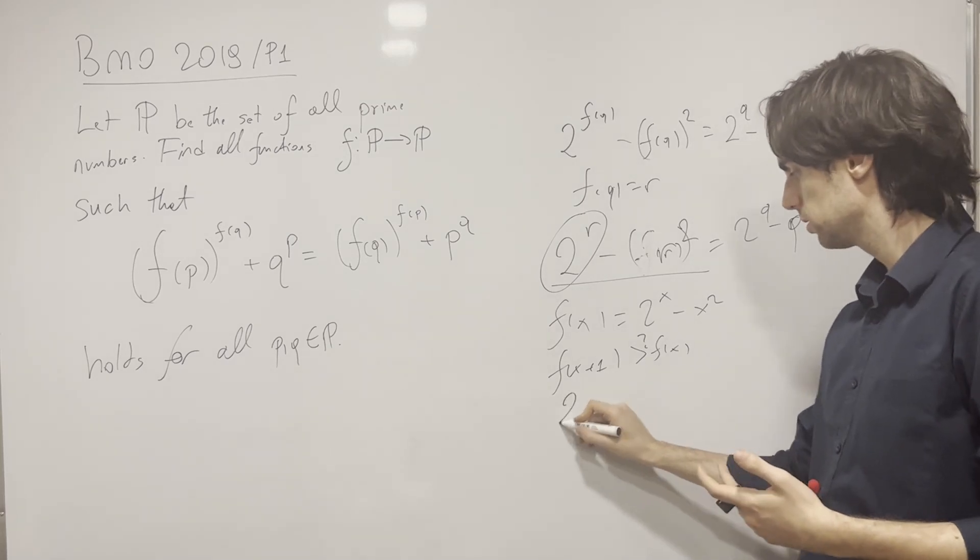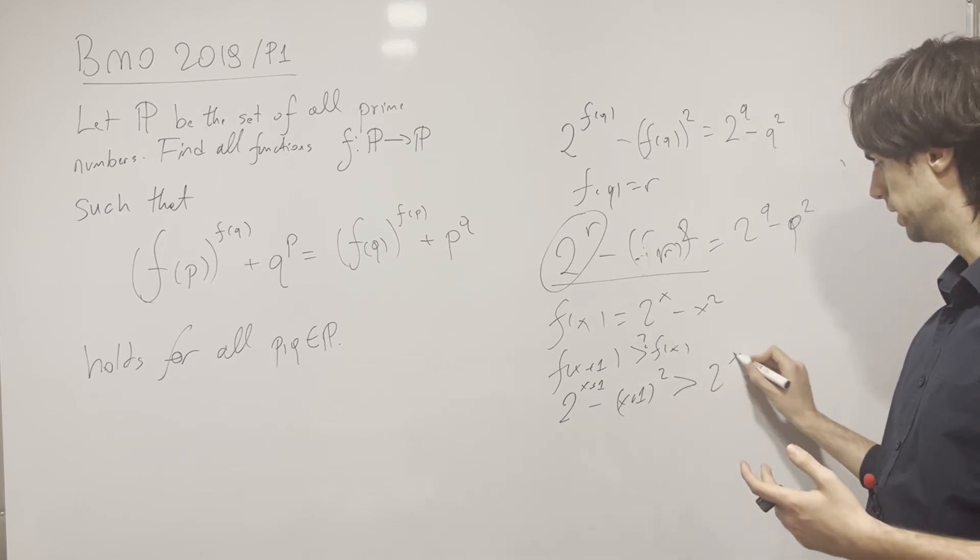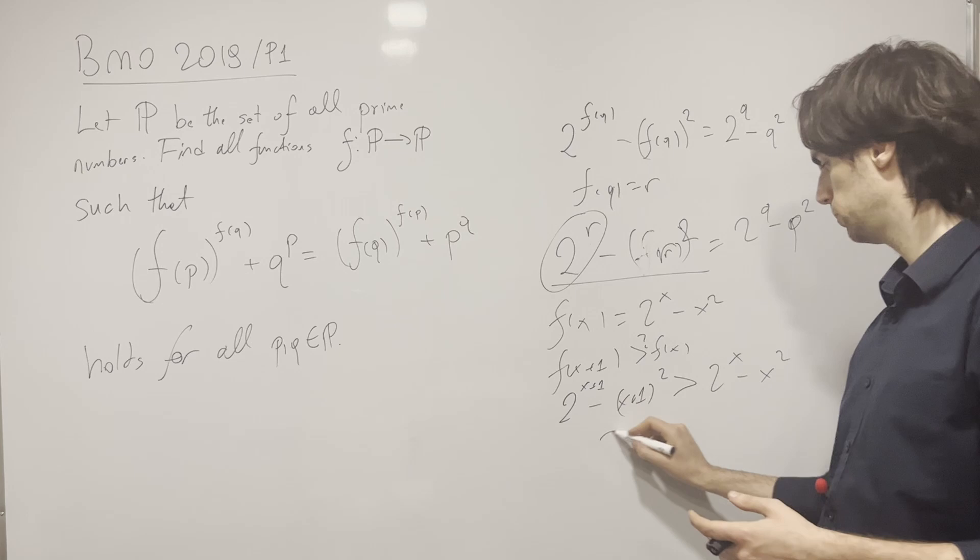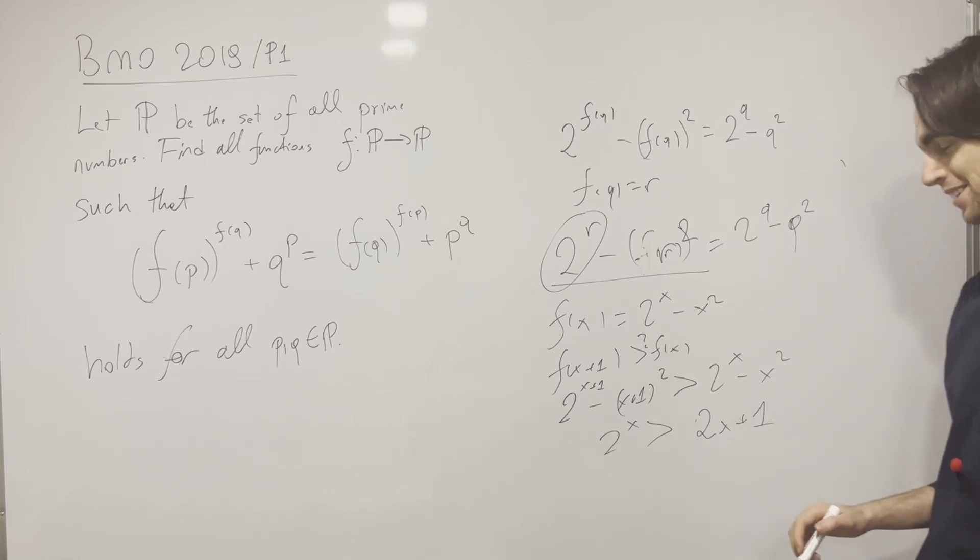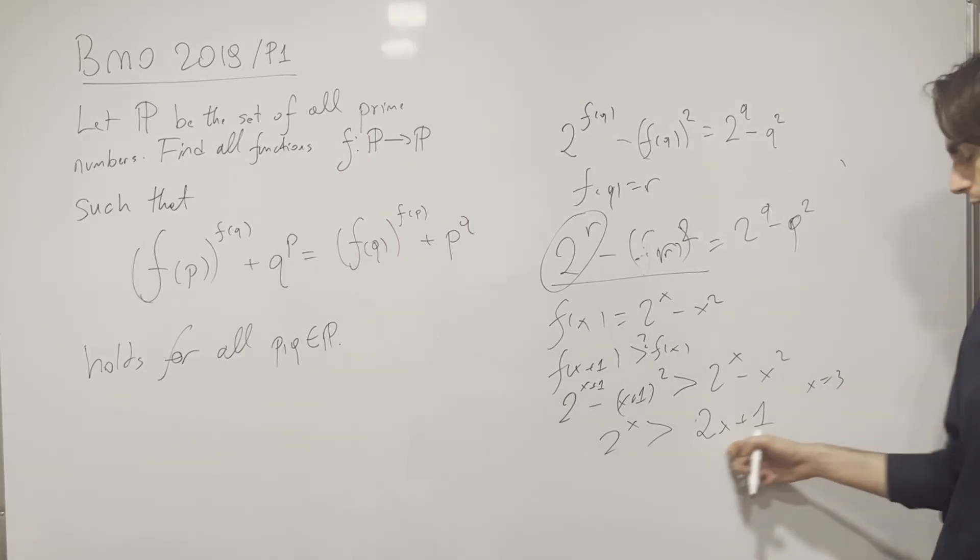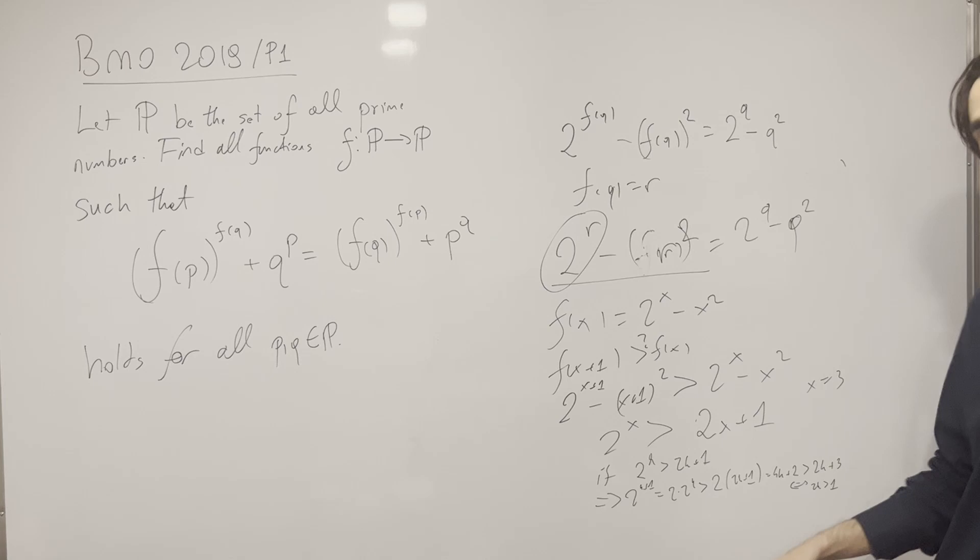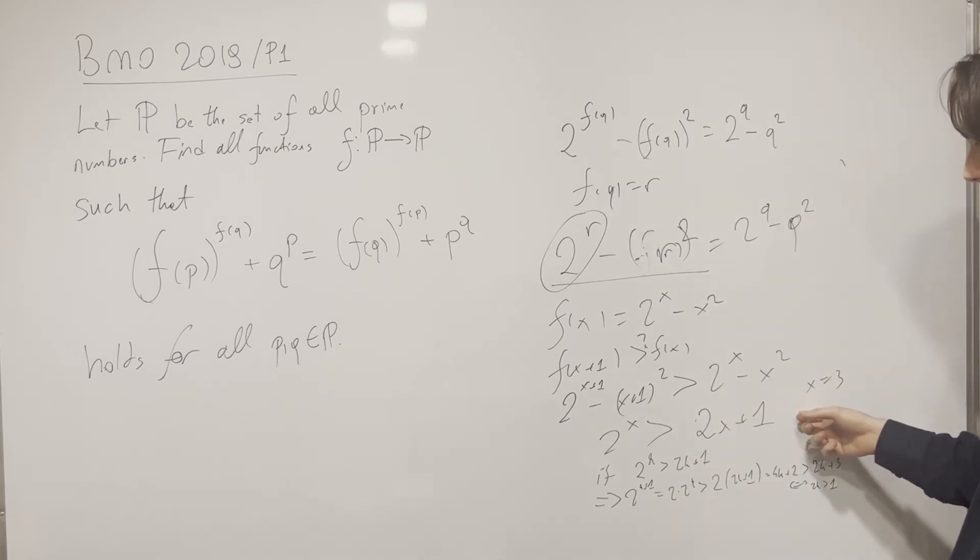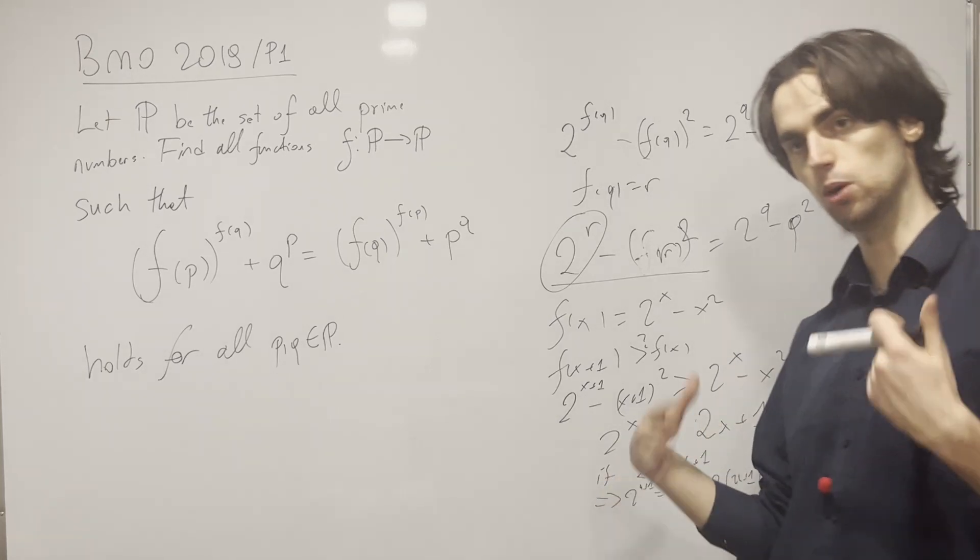Can we prove that under which conditions is f(x+1) greater than f(x)? Because if this function is increasing, we're done. We've just proved that every single prime, or if it's increasing starting from one point, we're going to have infinitely many primes just done. This feels like it's increasing. 2^(x+1) - (x+1)^2 needs to be greater than 2^x - x^2. We need to have 2^x greater than 2x + 1. So this is definitely increasing. We can prove this now via induction.